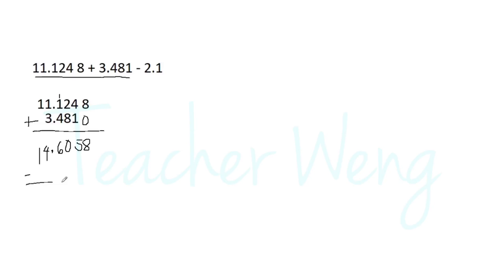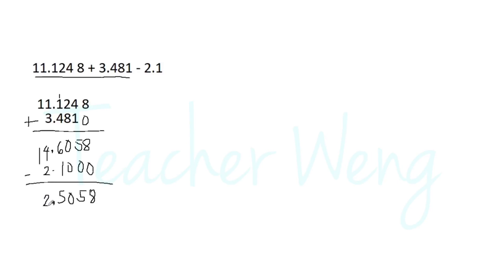Now let us subtract two and one tenth. Add zeros to avoid confusion. Eight minus zero is eight, five minus zero is five, zero minus zero is zero, six minus one is five. Copy the decimal point. Four minus two is two, and bring down one. So the answer is twelve and five thousand fifty-eight ten-thousandths.